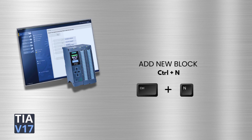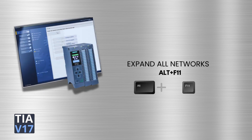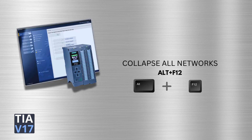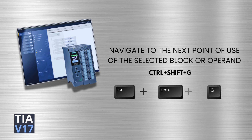To add a new block, the shortcut key is Ctrl plus N. To open a block PLC data type, the shortcut key is F7. To expand all networks, the shortcut key is Alt plus F11. To collapse all networks, the shortcut key is Alt plus F12.